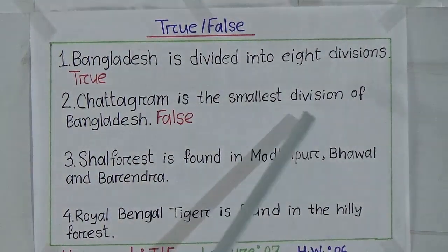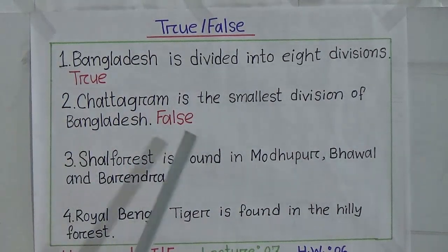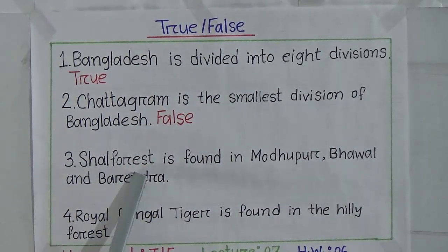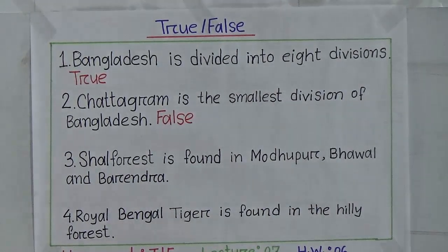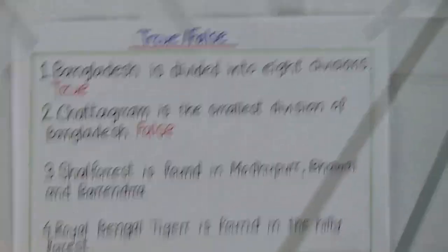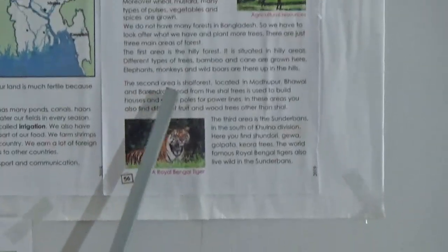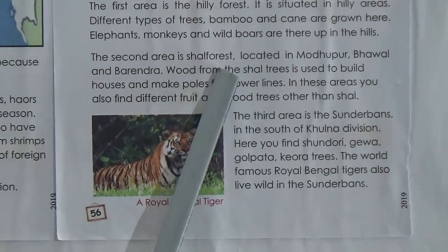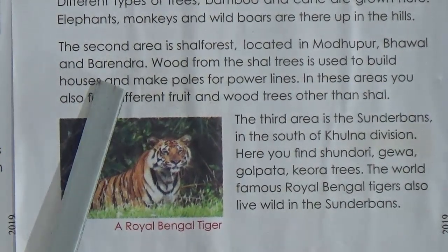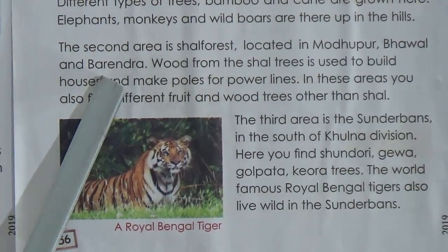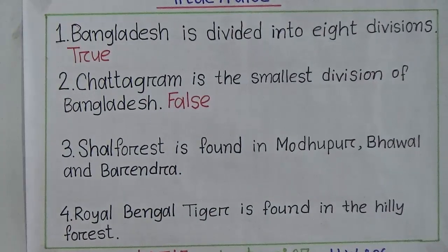Number three: Shal forest is found in Modhupur, Bhawal, and Barindra — is it true or false? From Lesson 4 we find that the shal forest is located in Modhupur, Bhawal, and Barindra, so the statement is true.